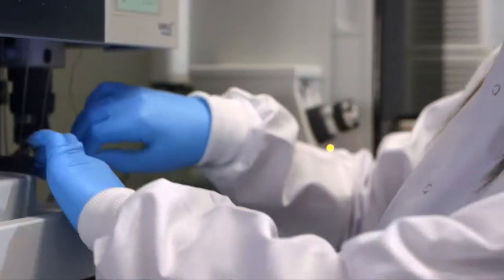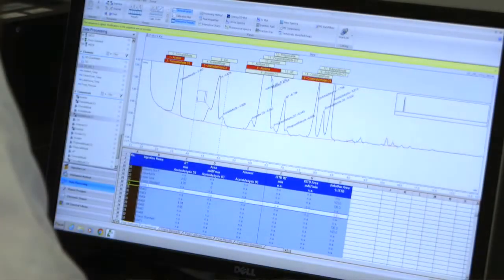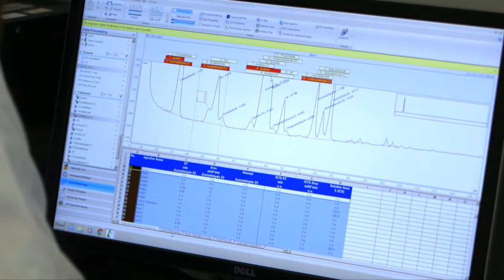We have approximately 400 HPLC methods within our quality management system and many of those are based on client specific formats, methods of calculating results, and system suitability. Chromelion has been able to deal with all of those calculations. In fact, we've not found something that it's not been able to do.